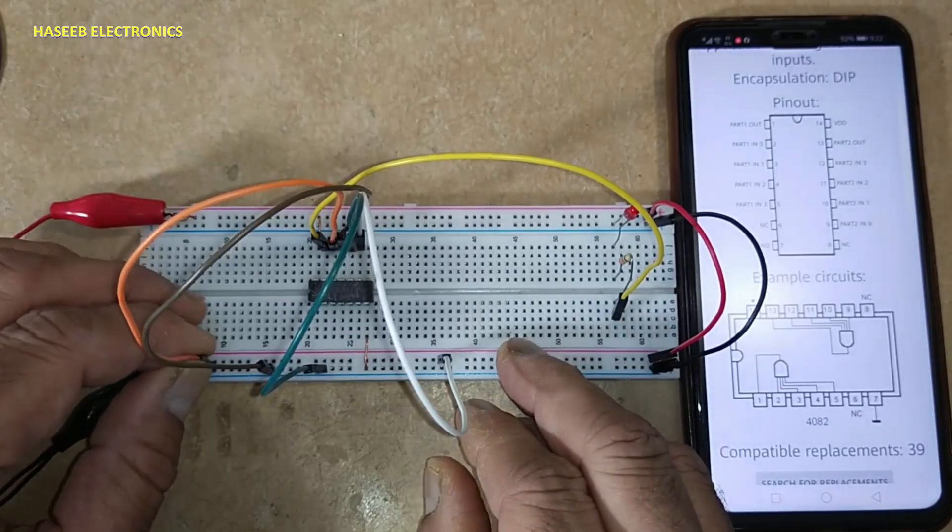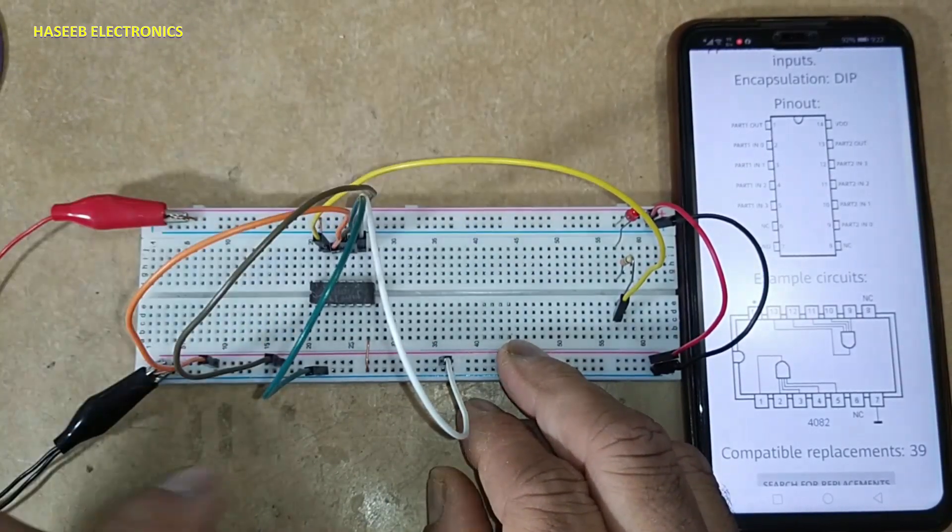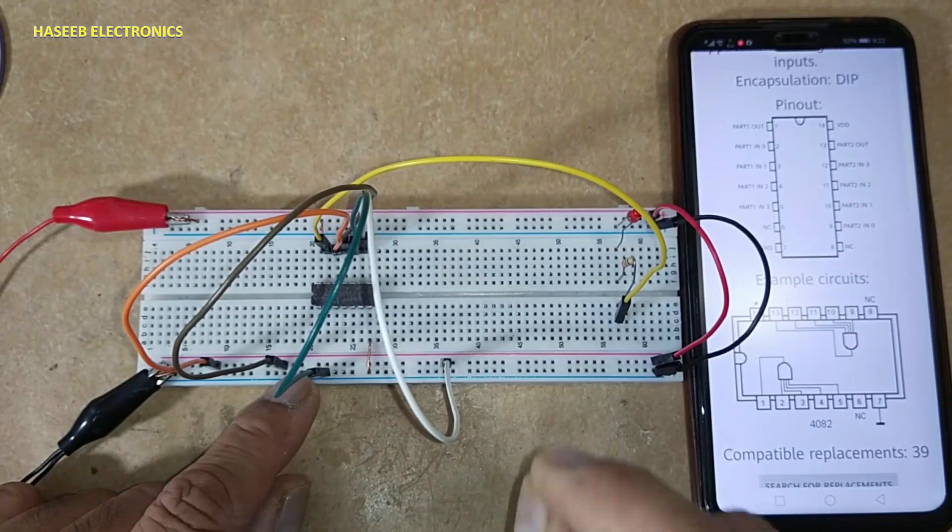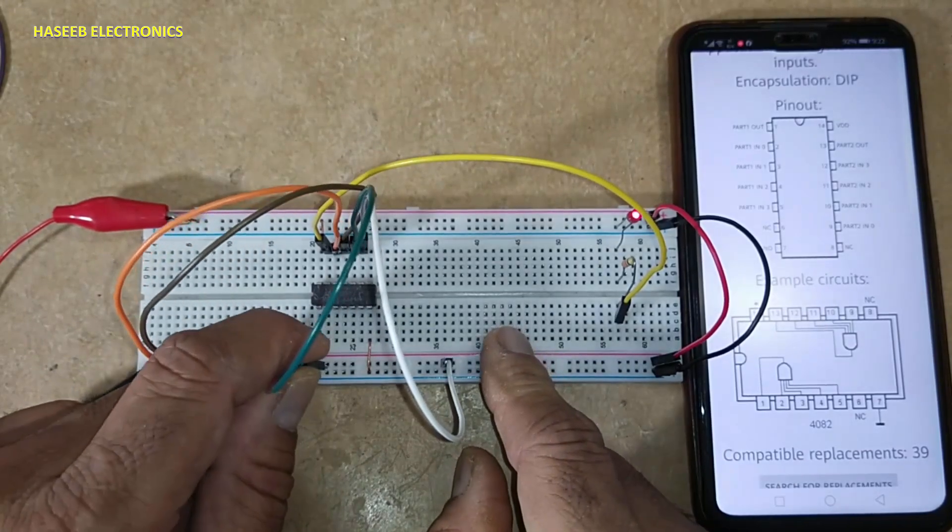One high, second high, third high. Out of four, if one input is low, output will be low. When all inputs will be high, output is high.